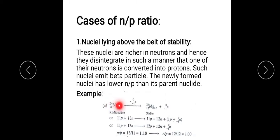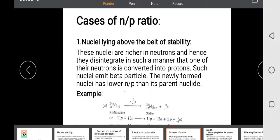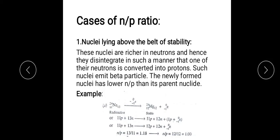Let's look at a sodium example. Sodium undergoes beta decay, emitting an electron (beta particle) and converting into magnesium. Sodium has 11 protons and 13 neutrons. So the N/P ratio = 13/11 ≈ 1.18, which is greater than 1 — hence it is unstable. After decay, magnesium-24 has 12 protons and 12 neutrons. N/P ratio = 12/12 = 1, which is stable. This is why the left-hand side (sodium) is unstable and the right-hand side (magnesium) is stable.